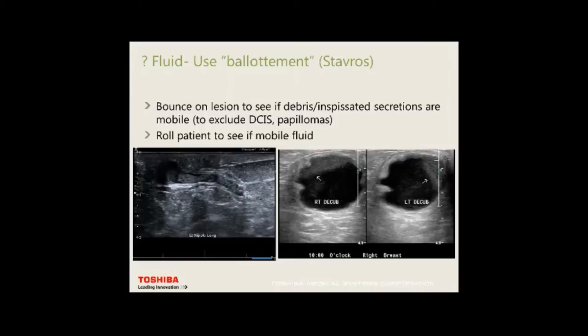In this case, the patient had DCIS. You may roll the patient to see if there's mobile fluid. Here we have a fat-fluid layer — this is a galactocele where fat is higher and the milky product is lower. Galactoceles are milk-filled cysts, usually in lactating women, and can be echogenic or hypoechoic depending on the fat content of the milk.